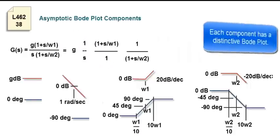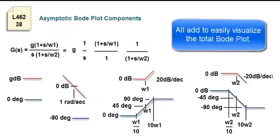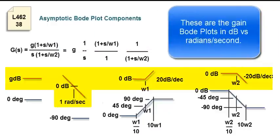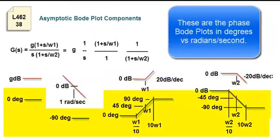Each component has a distinctive Bode plot. Add all of the Bode plots to easily visualize the total Bode plot. These are the gain Bode plots in dB versus radians per second, and these are the phase Bode plots in degrees versus radians per second.